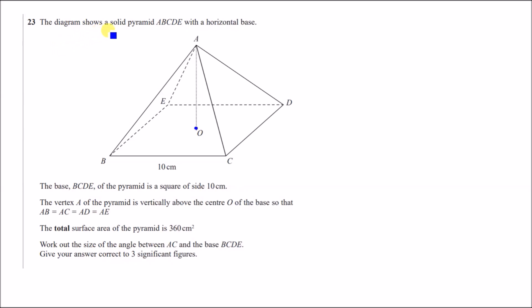Alright guys, number 23. So the diagram shows a solid pyramid ABCDE with a horizontal base. So that's the ground. The base BCDE of the pyramid is the square of side 10. Alright, so that's quite useful. The vertex A of the pyramid is vertically above the center O. So it's vertically above, meaning this is perpendicular to the ground. Such that AB equals AC and so on. So every length is the same. So every single diagonal length is the same too.